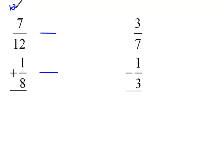So 12 times 1 would be 12, and 8 will not go into that. 12 times 2 would be 24, 8 will go into 24. So that tells us that 24 is our common denominator.